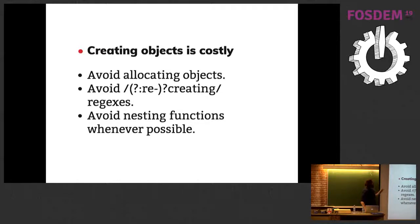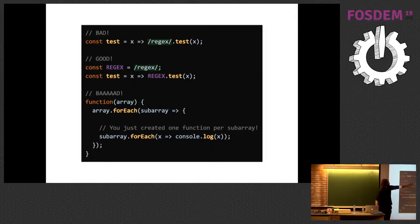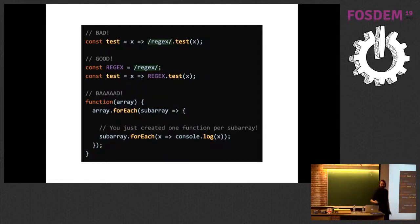Second tip: creating objects and allocating memory in JavaScript, like in any language, is very costly. Avoid allocating objects when you don't need to. Avoid recreating regexes inside functions — if you create a regex in a function, you'll have bad performance. And avoid nesting functions when you can. Concretely: the bad approach creates a regex inside the function each call; the good approach puts it outside so the engine doesn't recreate it. Even worse: using array forEach with a nested function means you create one function per element in your array.